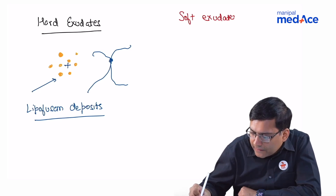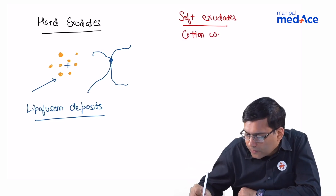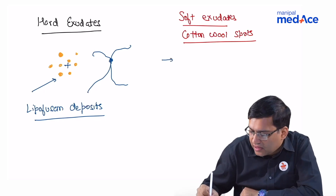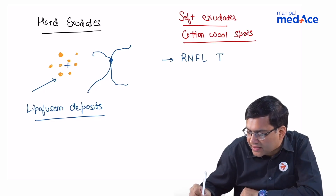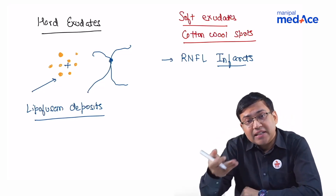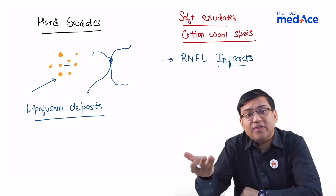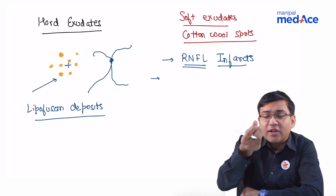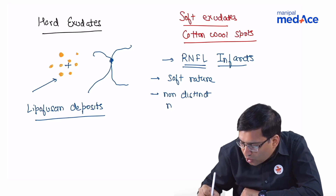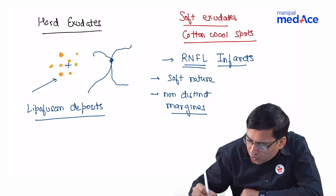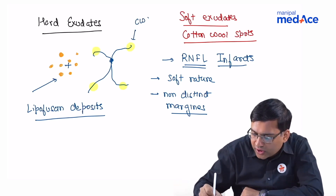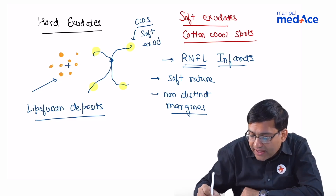Soft exudates, also called cotton wool spots, are actually not true exudates — they are retinal nerve fiber layer infarcts. They can be seen in diabetic retinopathy, hypertensive retinopathy, central retinal venous occlusion, and any type of vasculitis. These RNFL infarcts have a fluffy, cotton-like appearance with non-distinct margins, more around the vascular arcades.